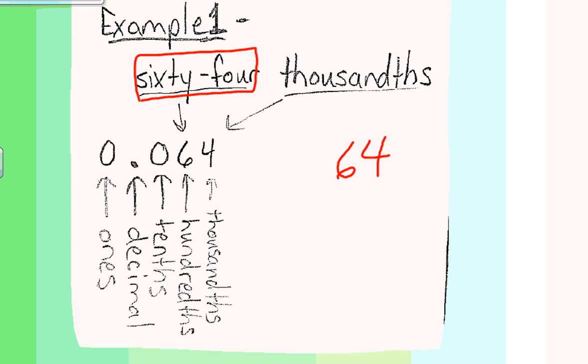And then we look at the last word, and that tells us the place value of the last digit. But sixty-four thousandths means that I must fill in a zero in the tenths place and put a decimal point in front of that.